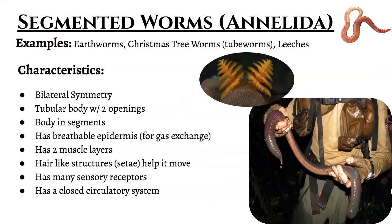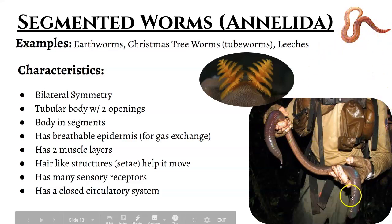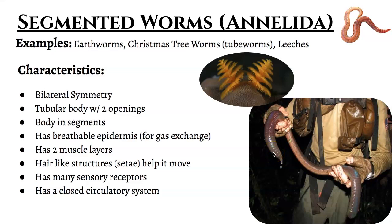First up is phylum Annelida, also known as the segmented worms. They're worms that are divided into segments — their bodies have divisions to them. The most obvious ones we think about are earthworms. This is a giant species of earthworm that can be found in Australia. But earthworms aren't the only segmented worms; in fact, most actually live in the ocean and in fresh bodies of water — they are the tube worms.